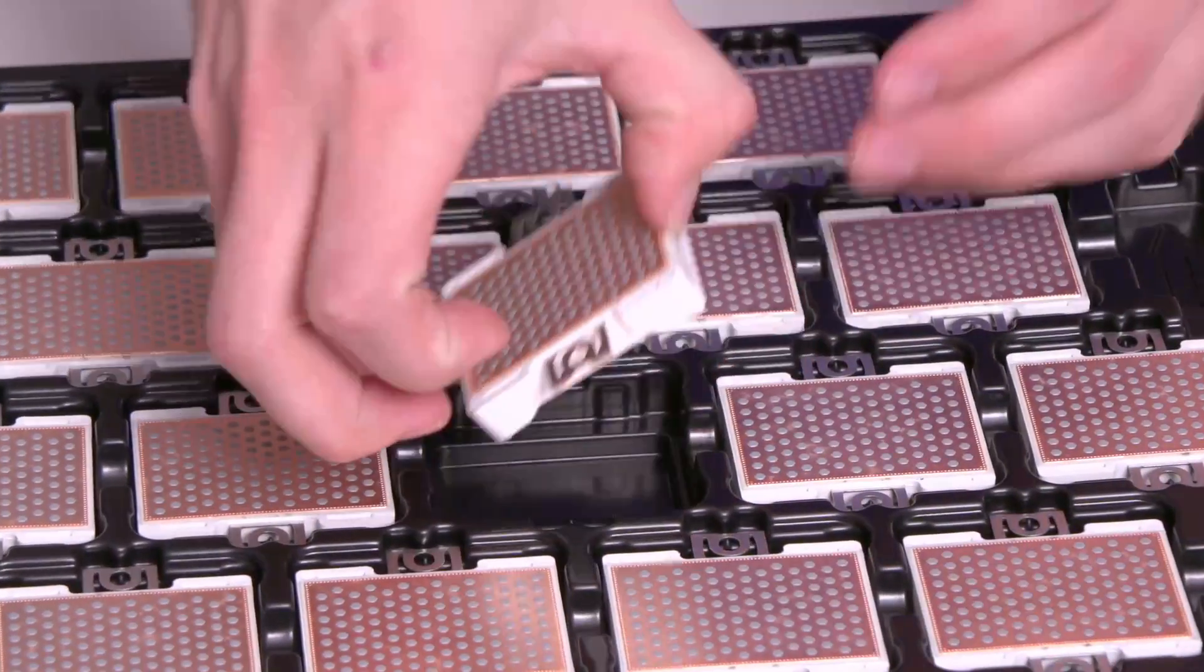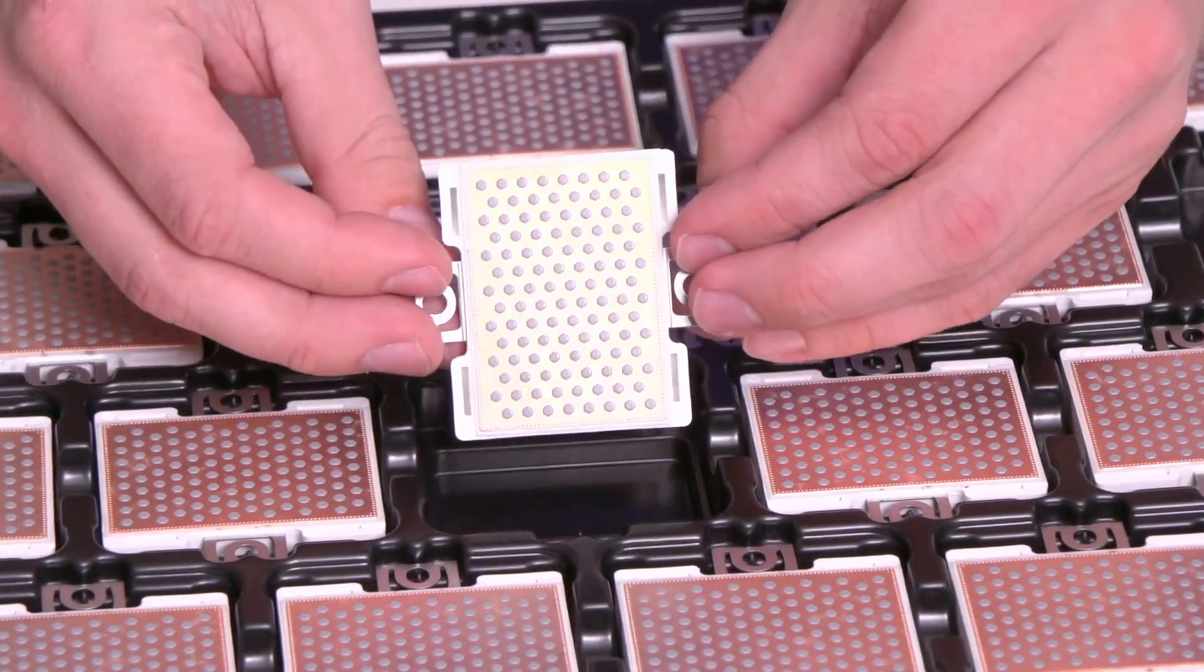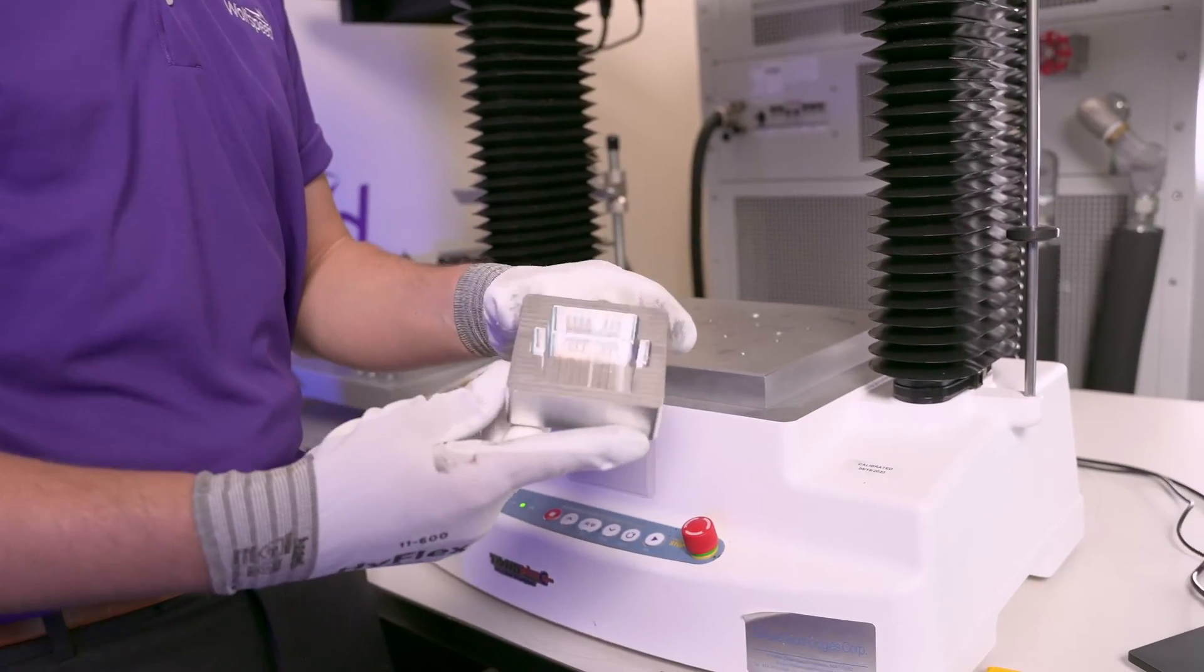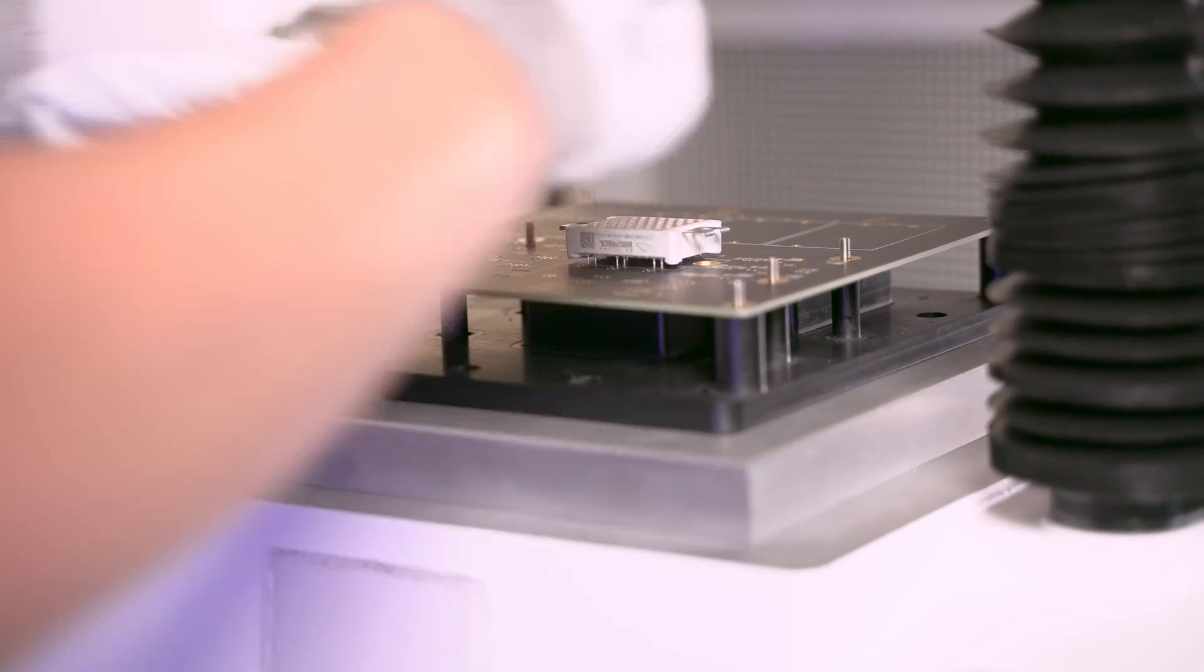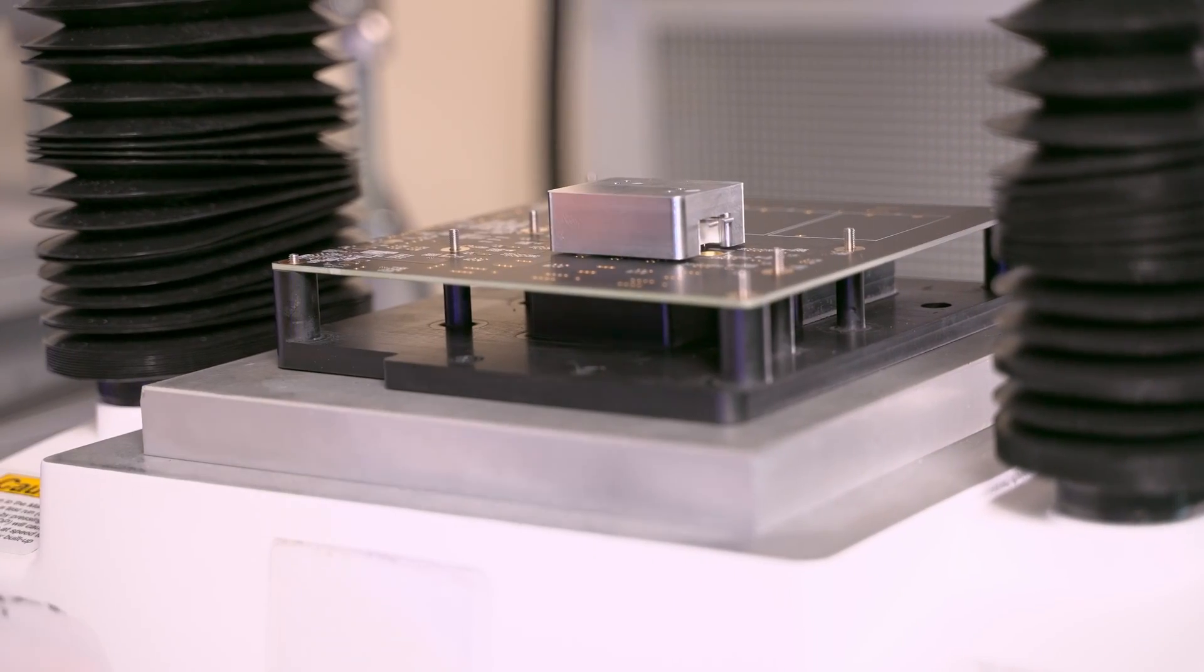If the modules feature pre-applied thermal interface material or TIM, you will need to develop press-in tooling with proper locating and tolerancing of the internal cavities to provide a sufficient press area. This will avoid interference with the TIM pattern.